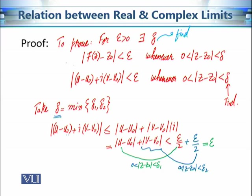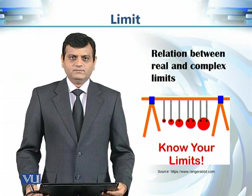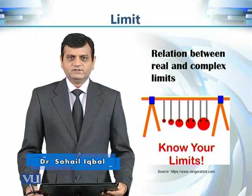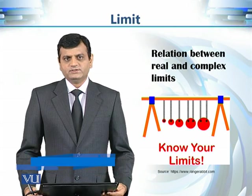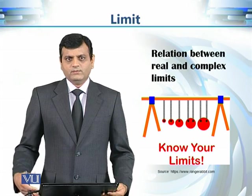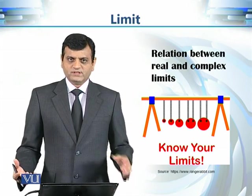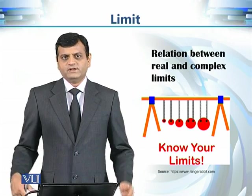If we want to use both facts — that this is less than epsilon/2 and this is less than epsilon/2 — we should assume the distance between z and z₀ is less than the minimum of delta₁ and delta₂. So we take our delta to be the minimum of delta₁ and delta₂. For this epsilon, we have found a delta, and corresponding to this delta, the distance between f(z) and z₀ is less than epsilon. In this discussion, we presented a proof of the relation between the limits of complex valued functions and the limits of real valued functions. This connection is very useful for calculating limits, and in our further discussions we are going to use this connection and present further results.